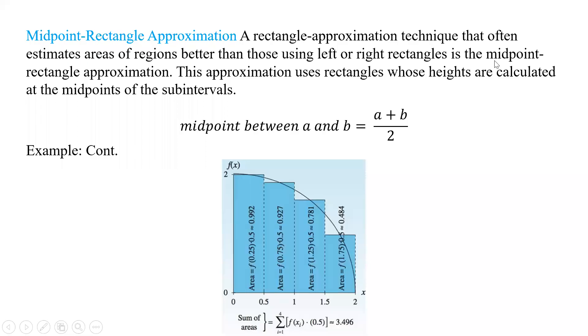All right, so we had the left, and then we did the right, and now we're going to do our third type, which is the midpoint rectangular approximation. Basically here we're looking at values that are going to come out actually better than the left or right in the overall long run.